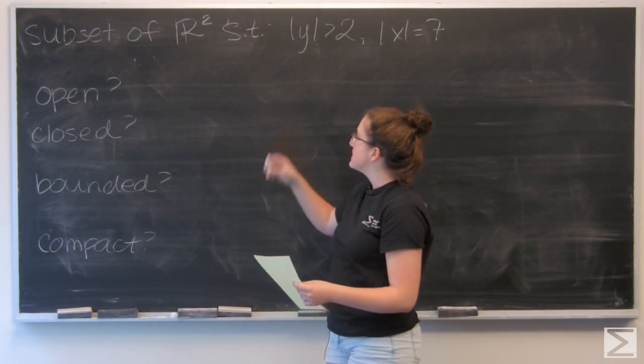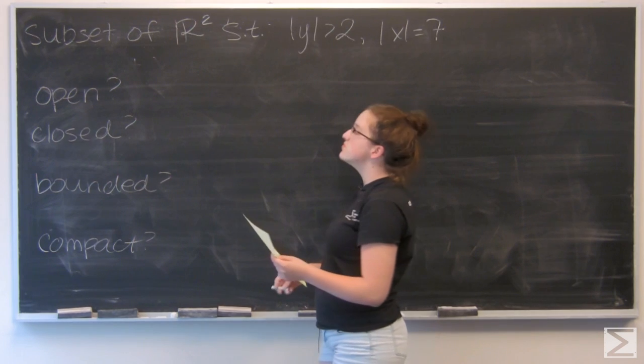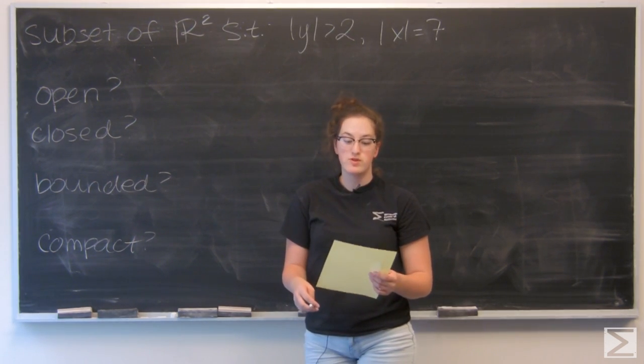For this question, I'm given a subset of R² such that the absolute value of y is greater than 2 and the absolute value of x is equal to 7.